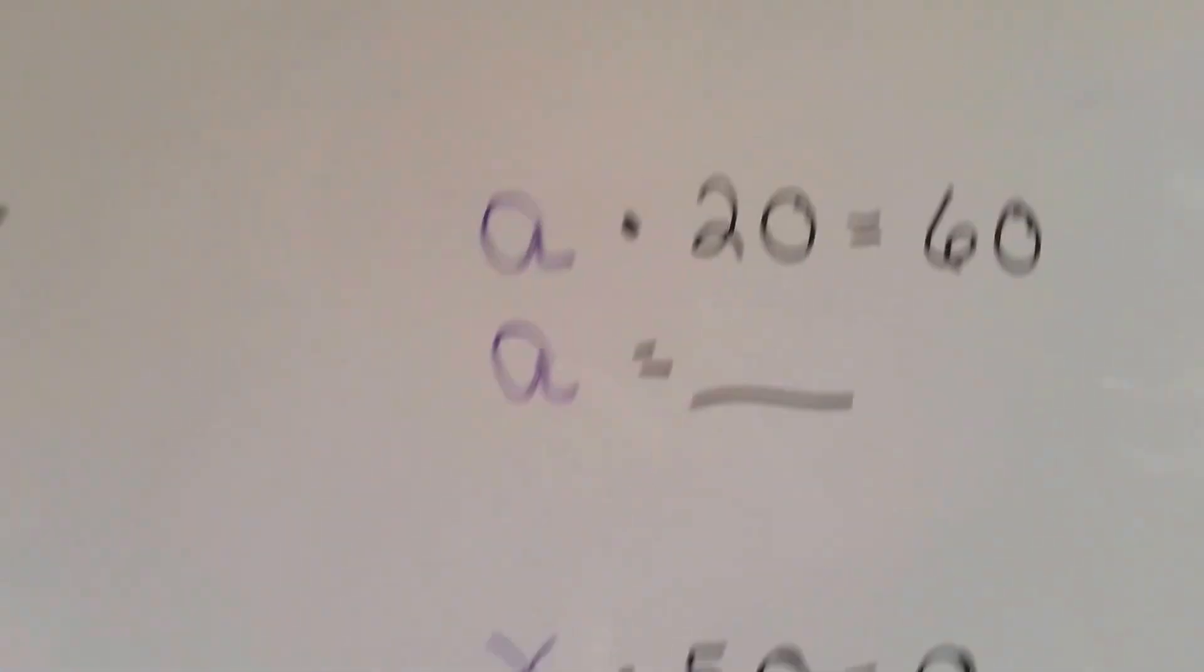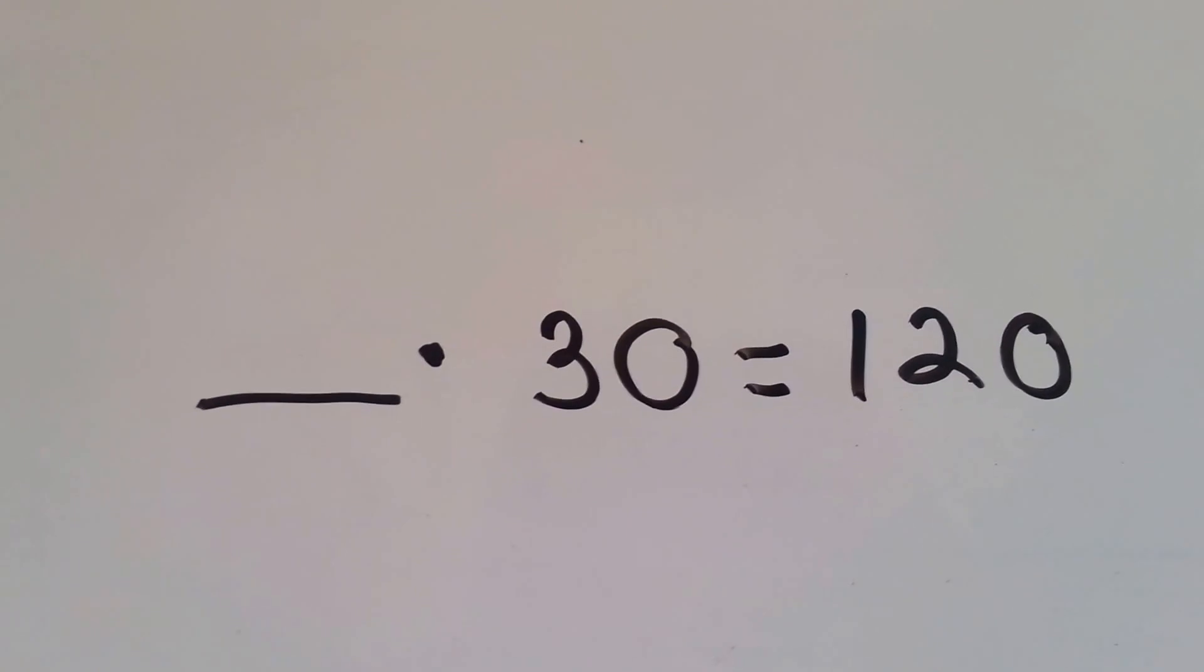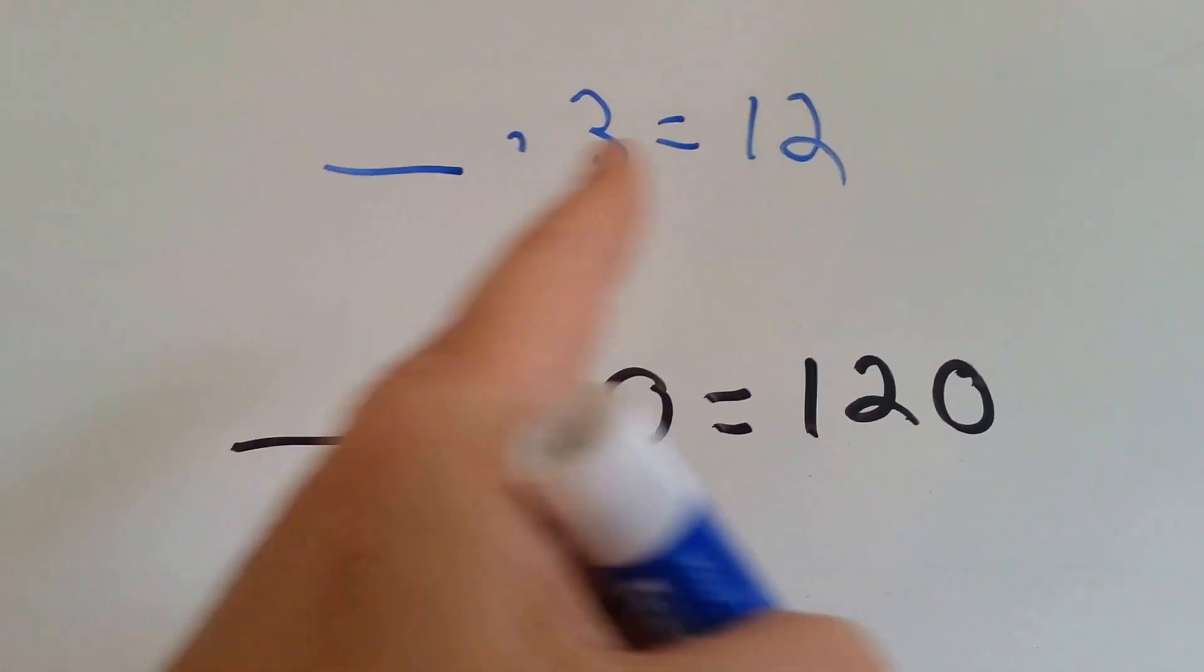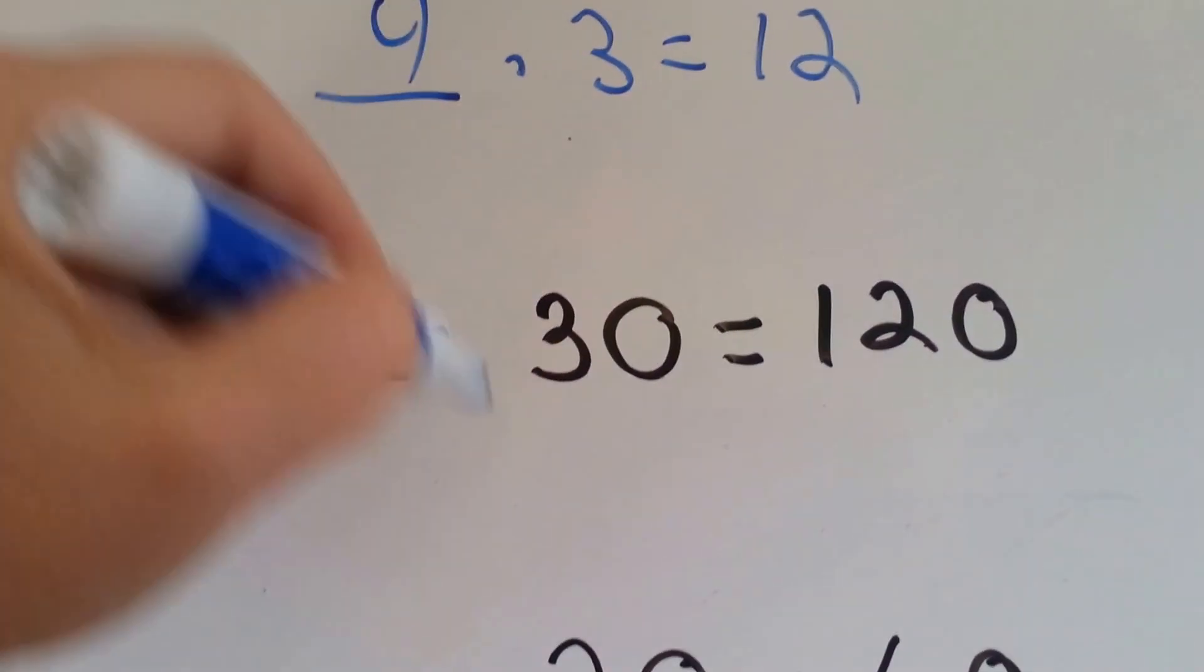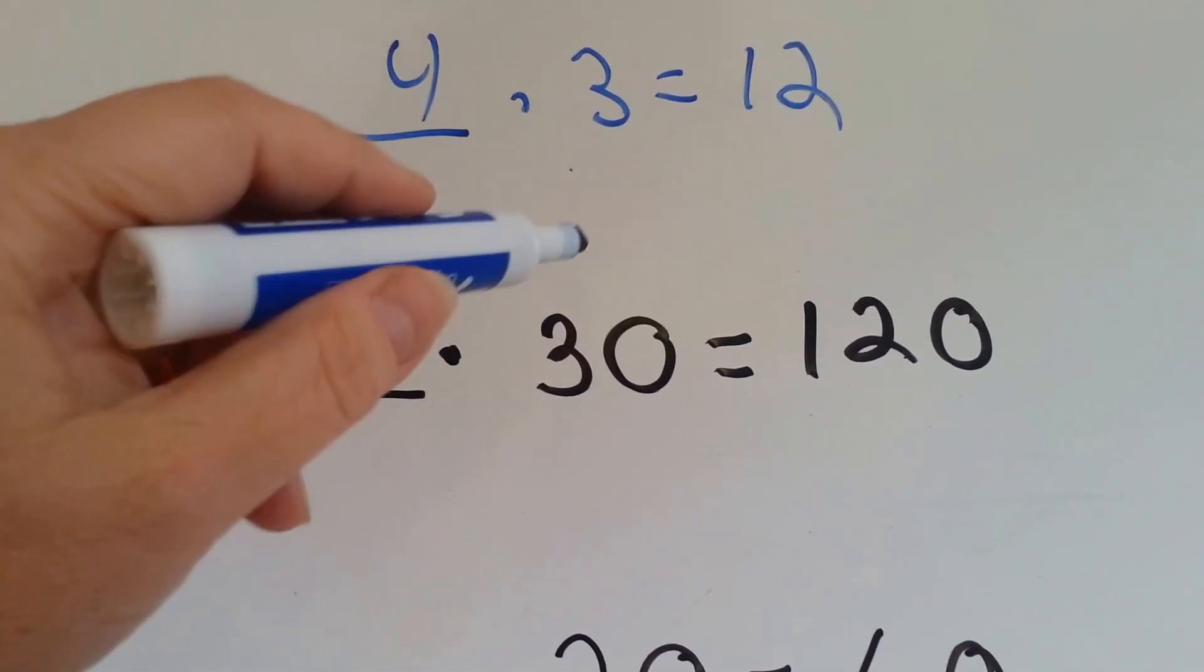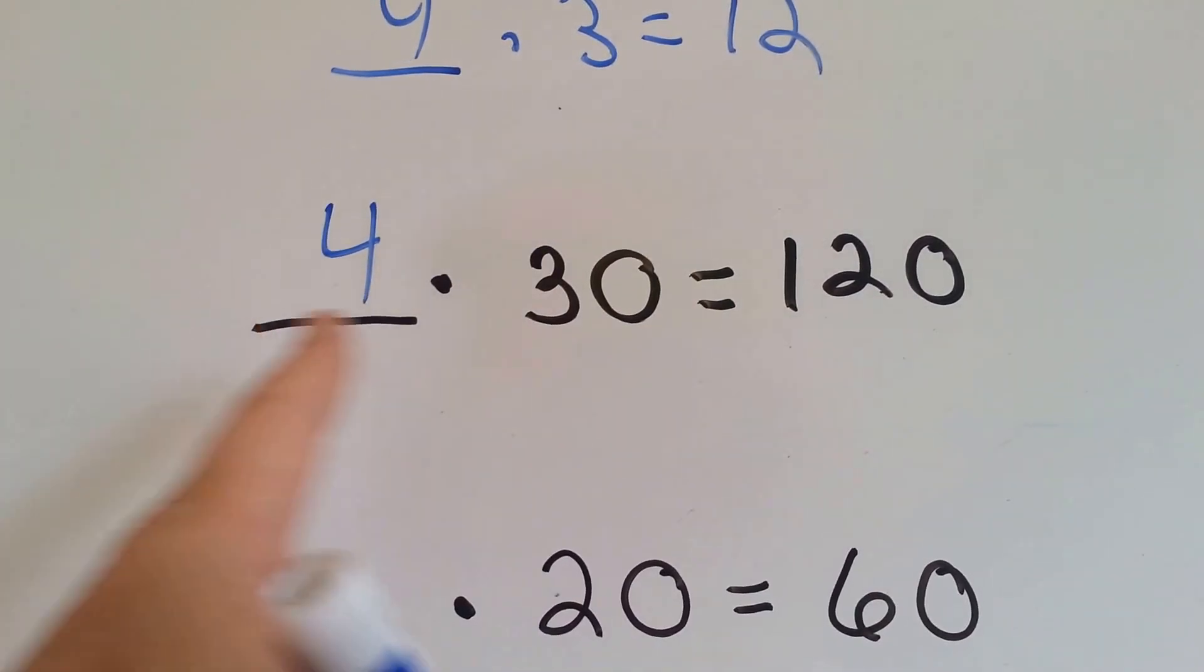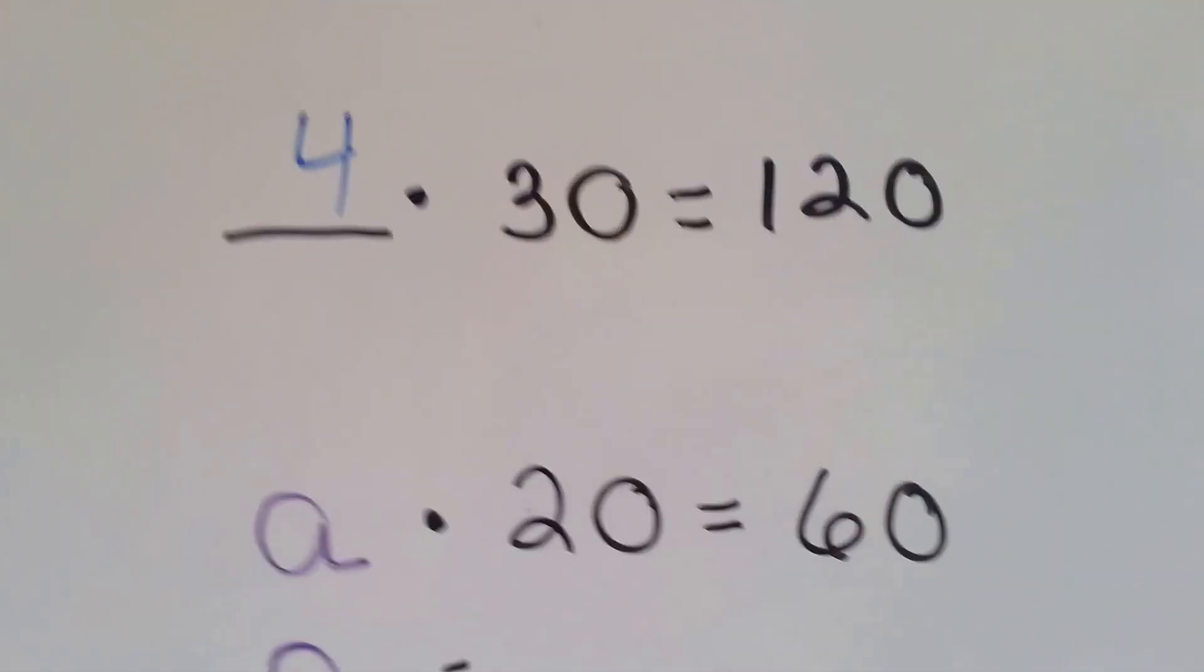Try this one. Blank times 30 equals 120. Well, blank times 3 equals 12. What times 3 equals 12? 4. 4 times 3 equals 12. So 4 times 30 equals 120. 30, 60, 90, 120.